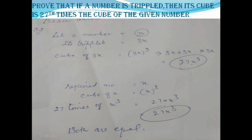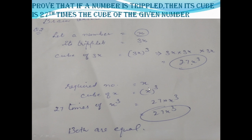Next question: prove that if a number is tripled, then its cube is 27 times the cube of the given number. Let any number be x. Its triple will be 3x. The cube of 3x is 3x × 3x × 3x = 27x³. The question says its cube is 27 times the cube of the given number, which is 27 × x³ = 27x³. Both sides are equal, so it is proved.